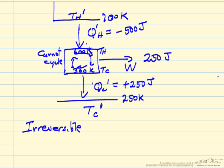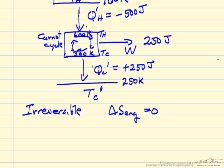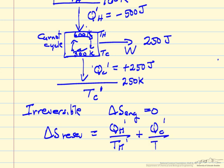Delta S for this engine has not changed. It's still zero. It's still running around in a cycle. The first law for it has not changed. But delta S for the reservoirs has changed. For the high temperature reservoir, QH prime over TH prime. And then for the low temperature reservoir, again, these values.